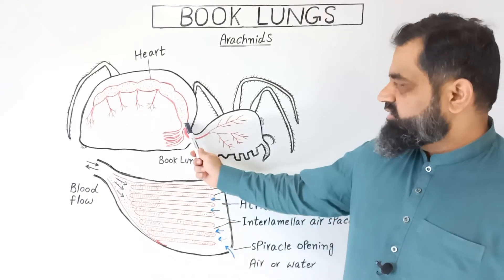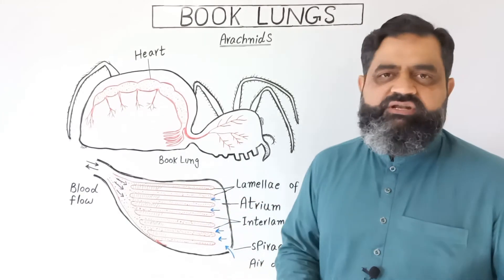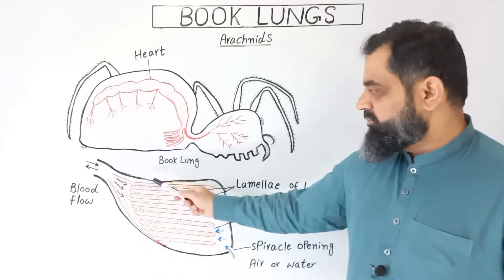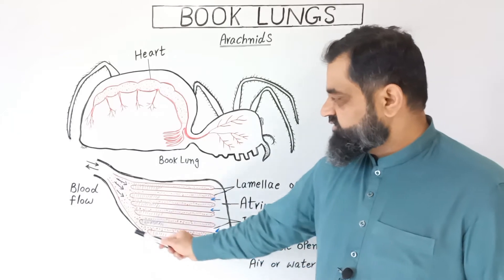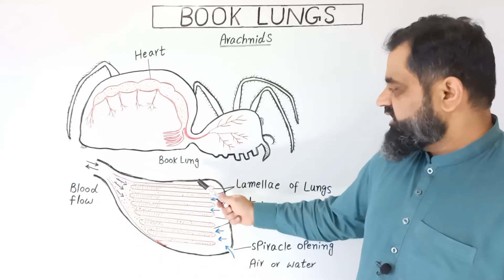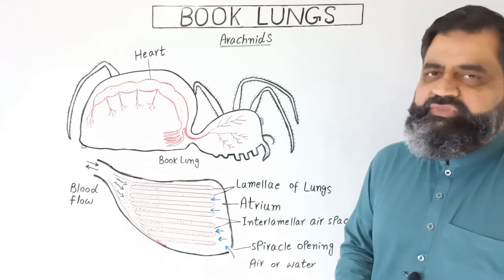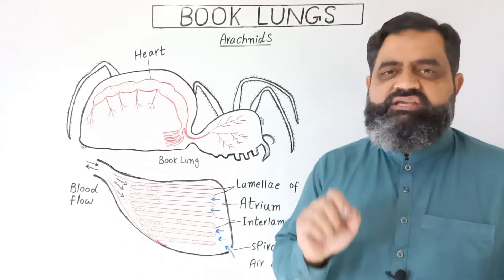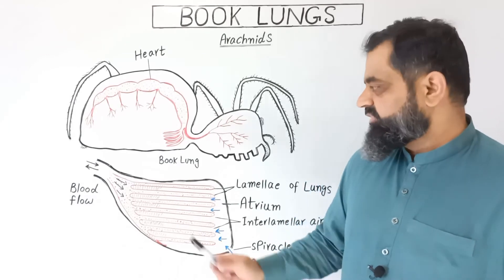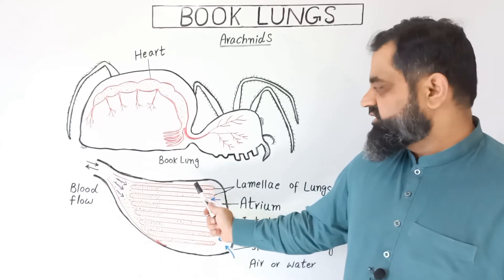I have taken this book lung out and enlarged it so that we can study it in detail. This book lung is composed of a membrane which acts like a balloon or like a space. The inside space between this membrane is known as atrium. In this atrium, there are leaf-like structures, membrane-like structures, which are known as lamella. As you can see in this diagram, the red colored shapes represent the lamella.